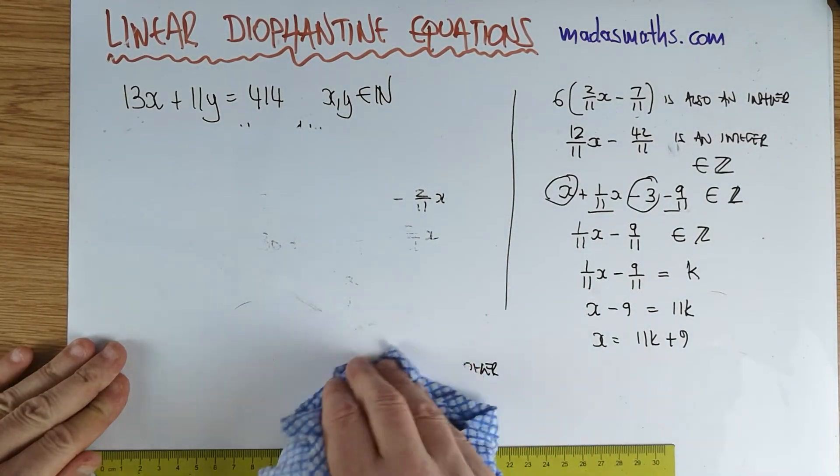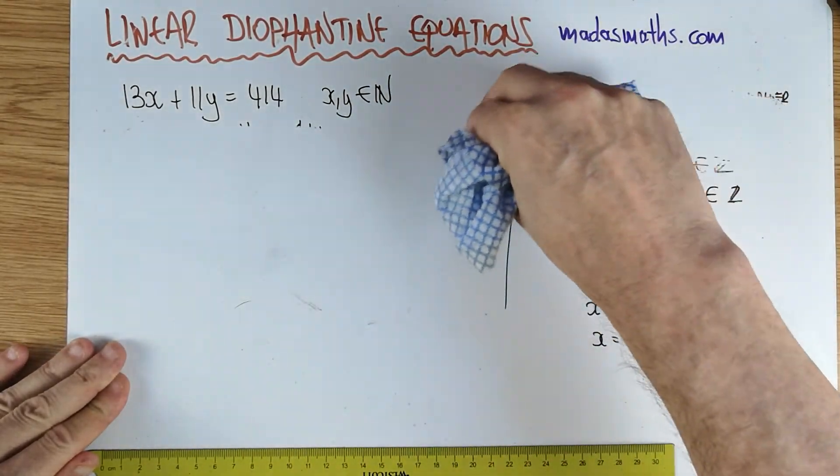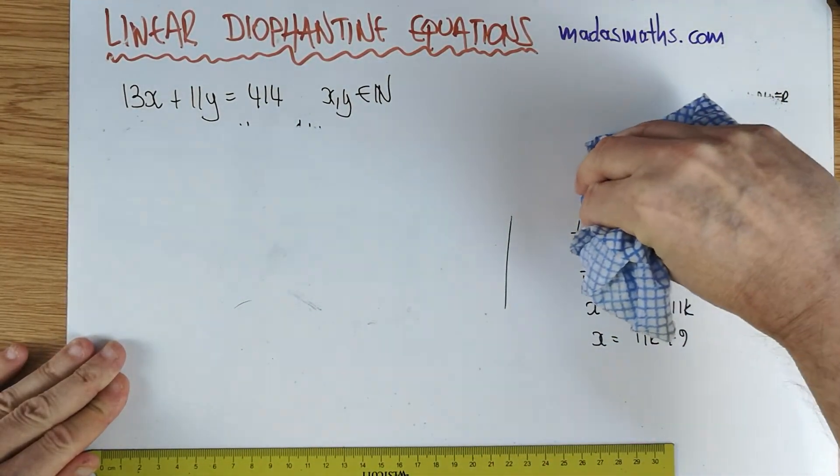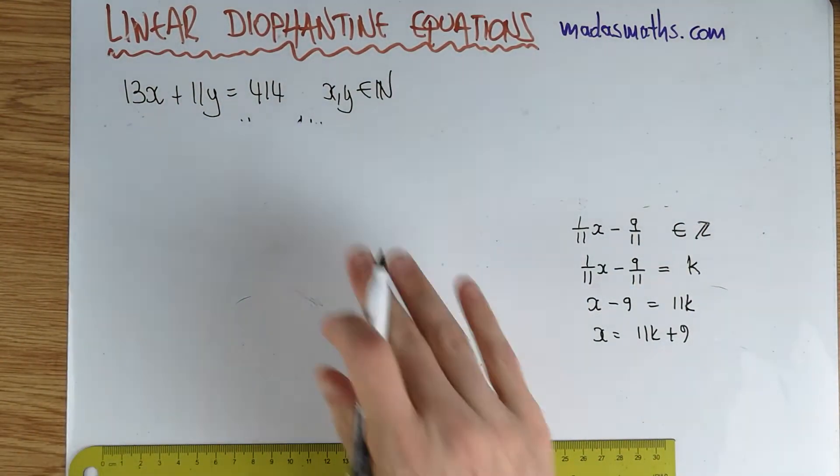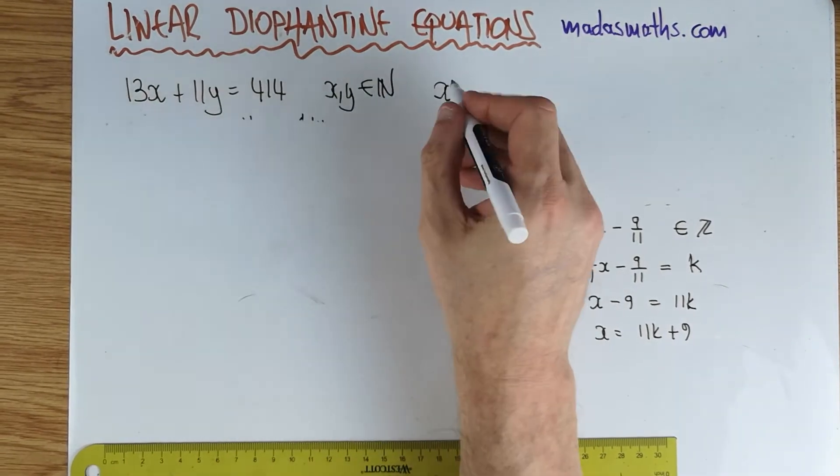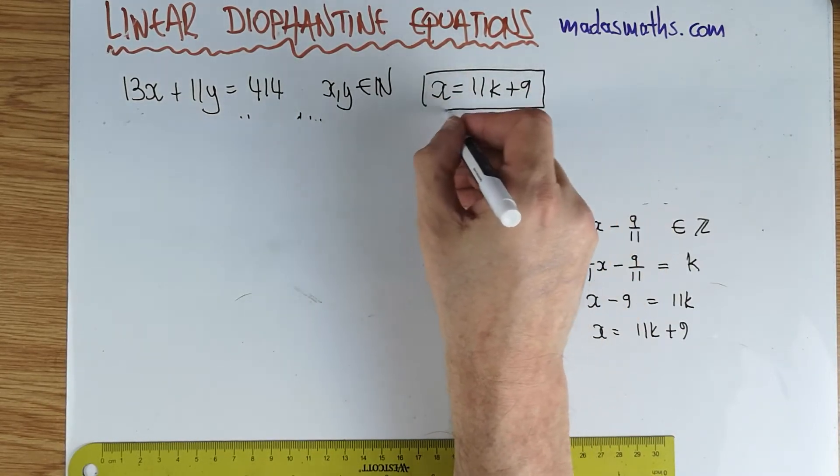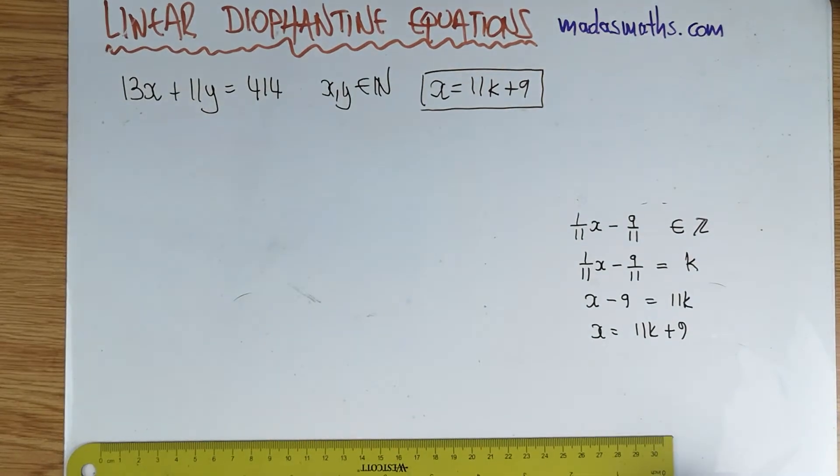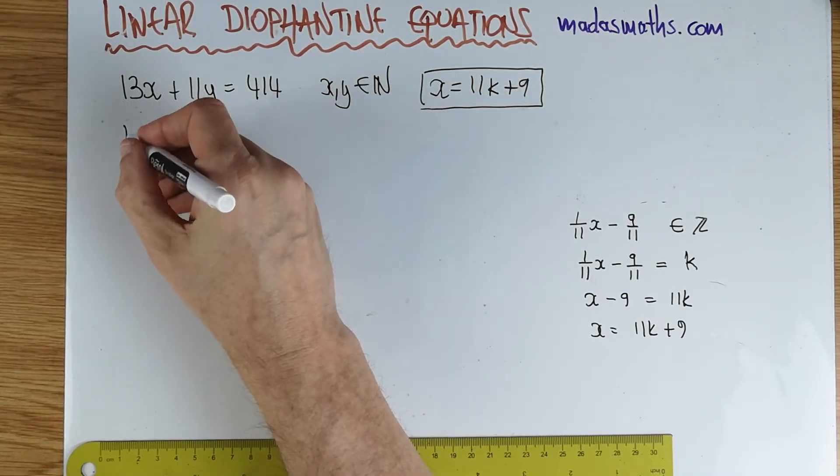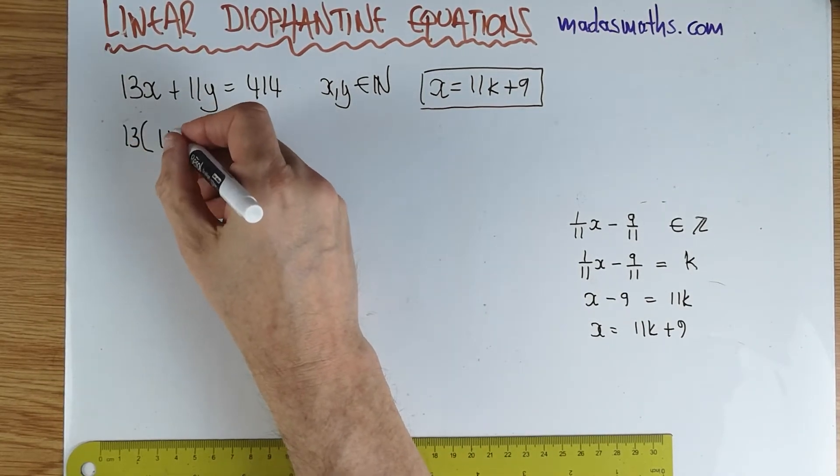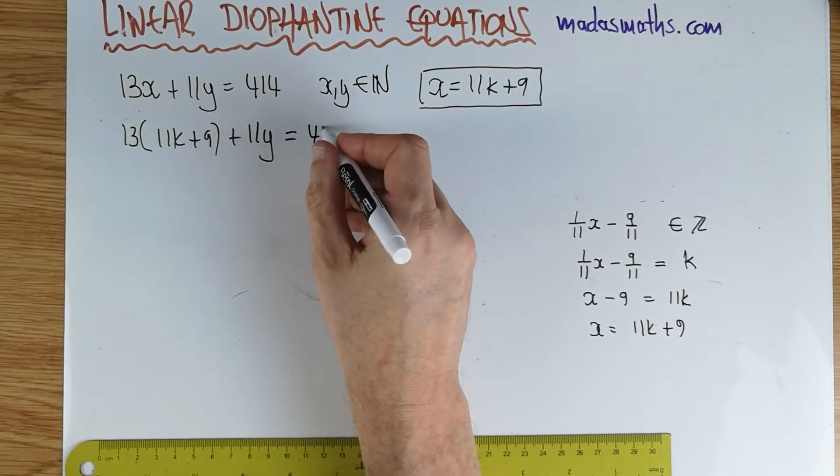So this particular parametric equation for x gives me the possible values of x. But of course, x and y are related by these equations, and therefore I can also find the y. So what I'm going to do now is get the same thing, but for y. I can substitute that now into my equation. So 13 lots of 11k plus 9 plus 11y must be equal to 414.